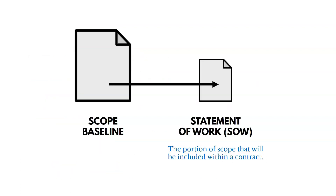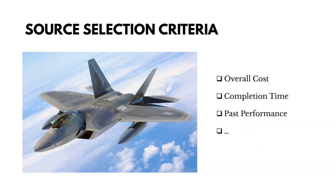To illustrate the Statement of Work: we're taking the scope baseline and pulling out portions that will go into a contract — that's the Statement of Work. And here's an example of Source Selection Criteria. If we're trying to buy planes, some ways we might score sellers include: what's the cost they're going to charge us, when can they complete it, and have they performed well on previous projects? Those are different ways to select or score potential sellers.